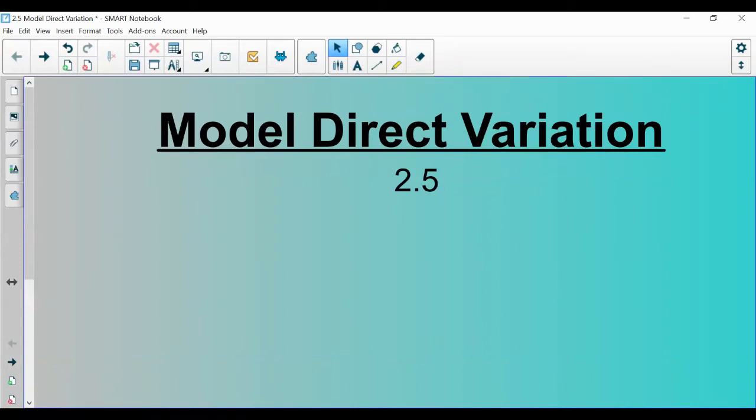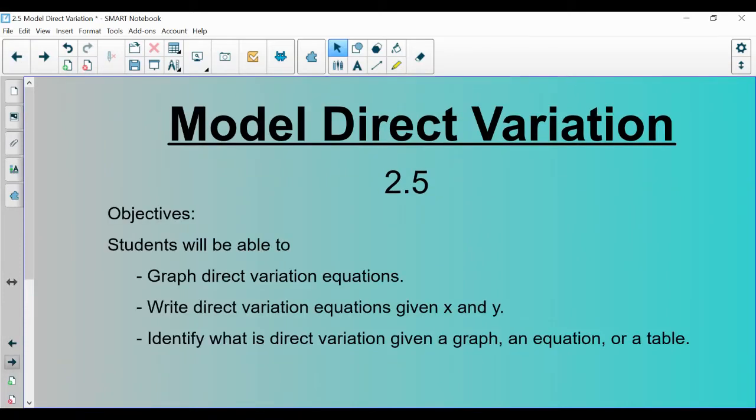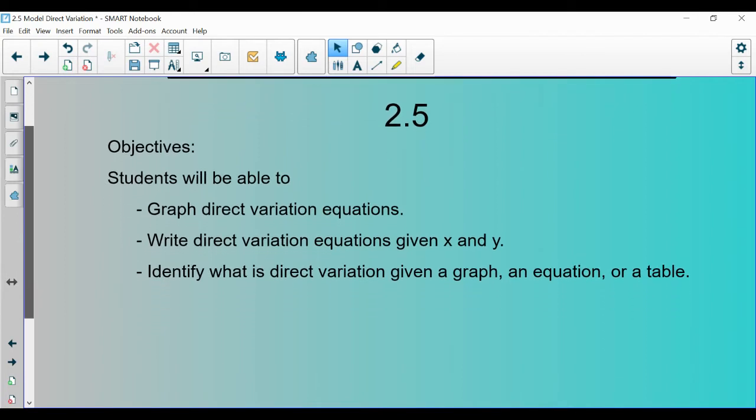This is section 2.5 on modeling direct variation. We have a couple of objectives for today. We want to be able to graph direct variation equations, write direct variation equations if I give you the values for x and y, and identify what is direct variation whether you're given a graph, an equation, or a table.